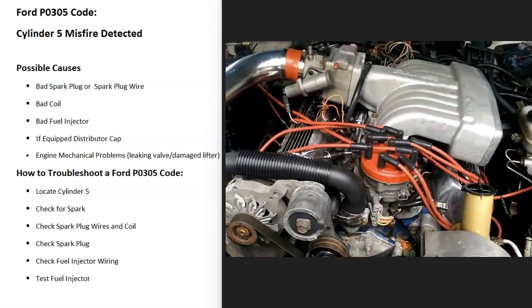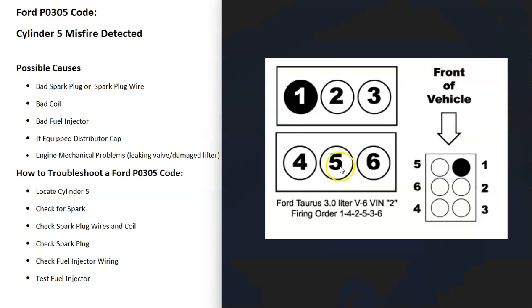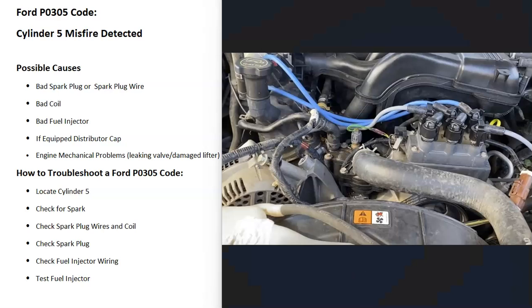To troubleshoot a Ford with the P0305 code, the first thing to do is go and locate cylinder 5 on your particular Ford, since this is the cylinder having the issue. There are some different ways to go about troubleshooting this.